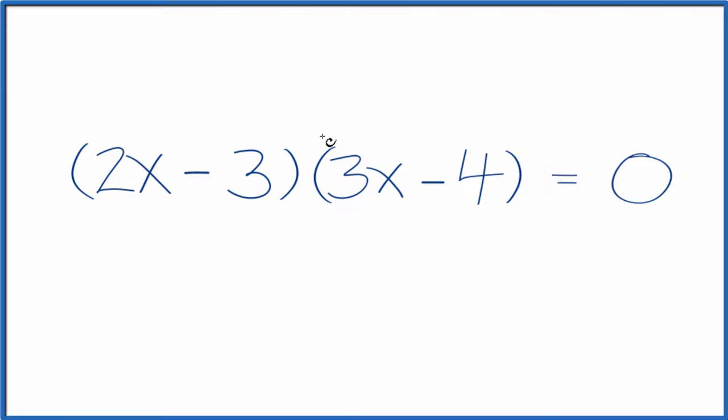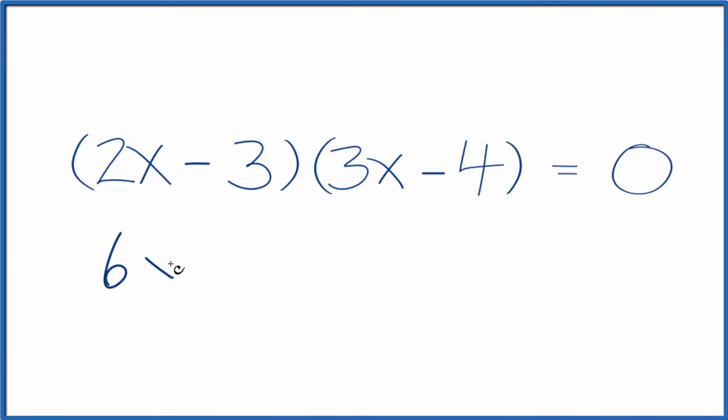Let's multiply 2x times 3x. That's 6x squared. And then 2x multiplied by negative 4. That's negative 8x.